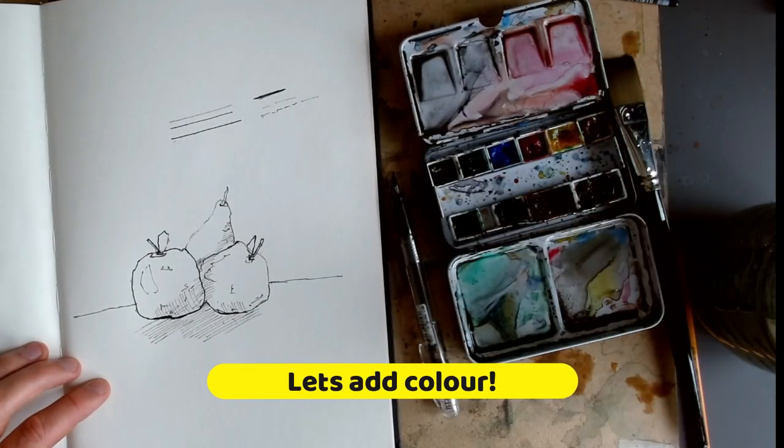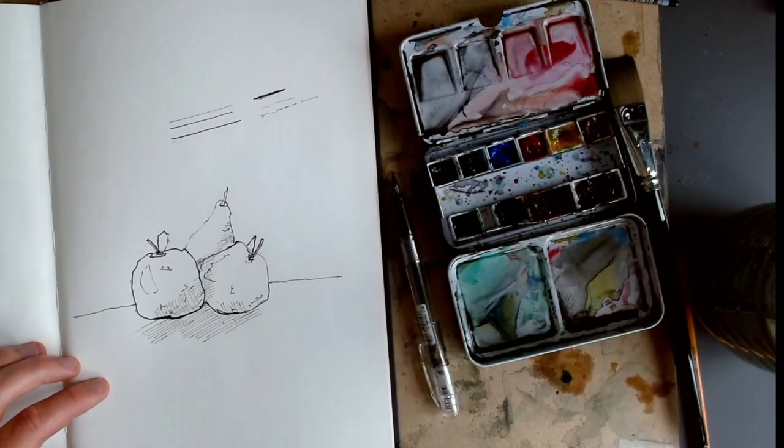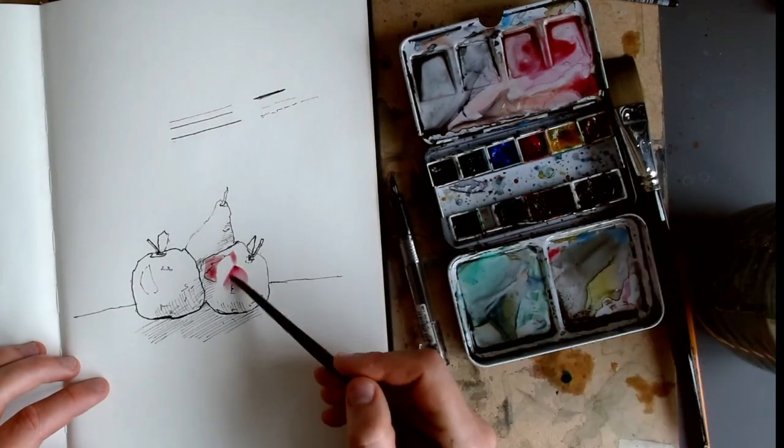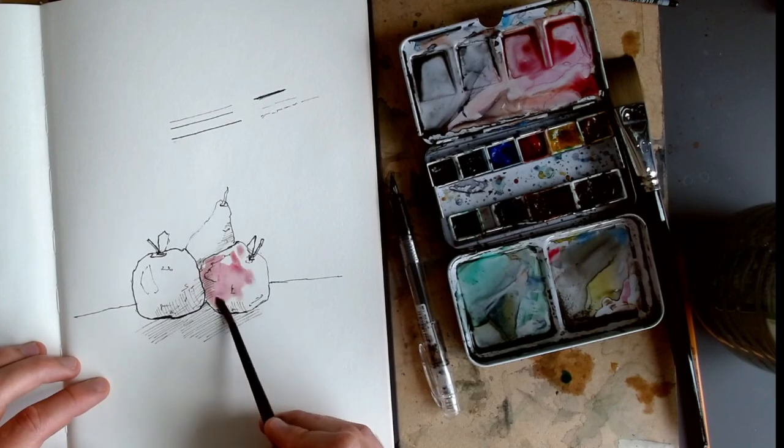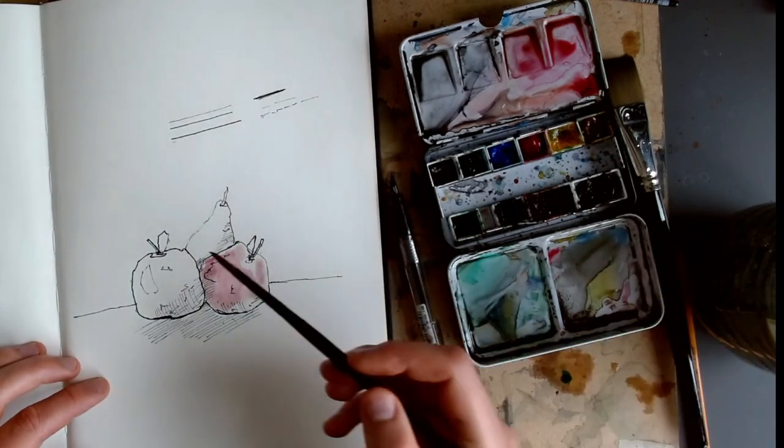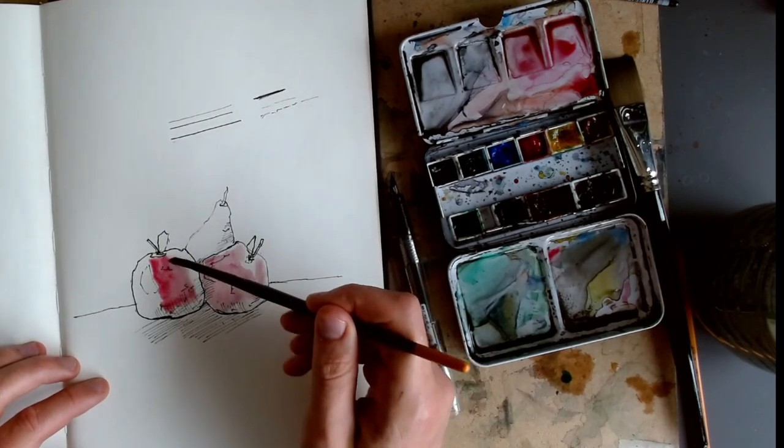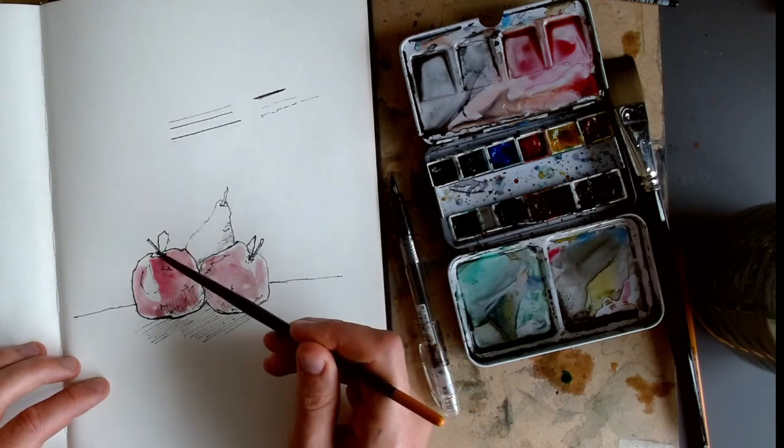If we want to we could add a little bit of color, and because we've already got the detail with this line work, all we need to do is just gently pop on some nice tones. You could do a little bit of pink in here as well, but that line work is doing all the work for us.